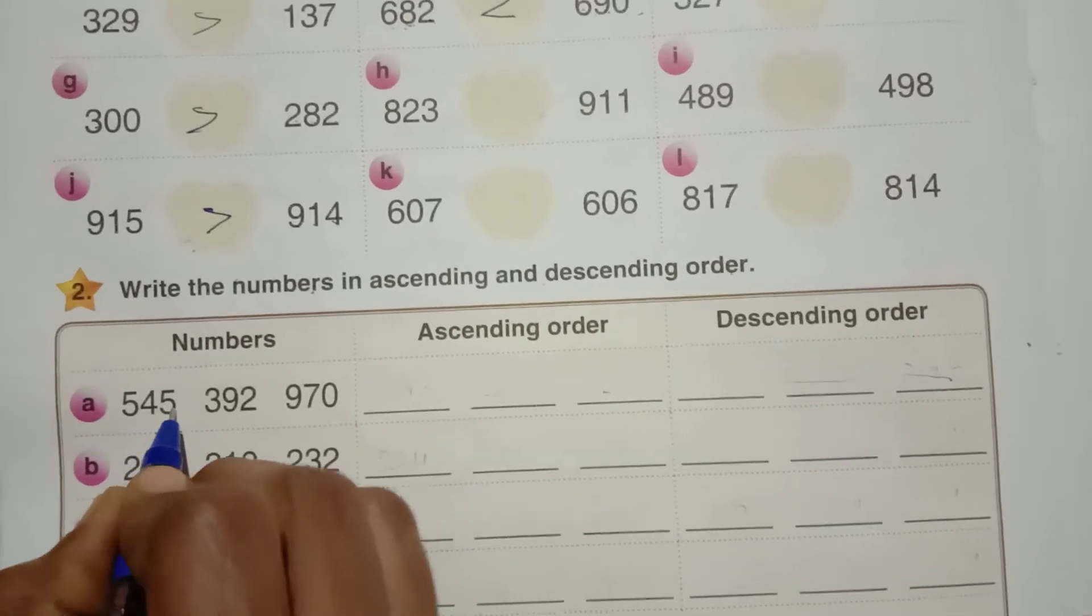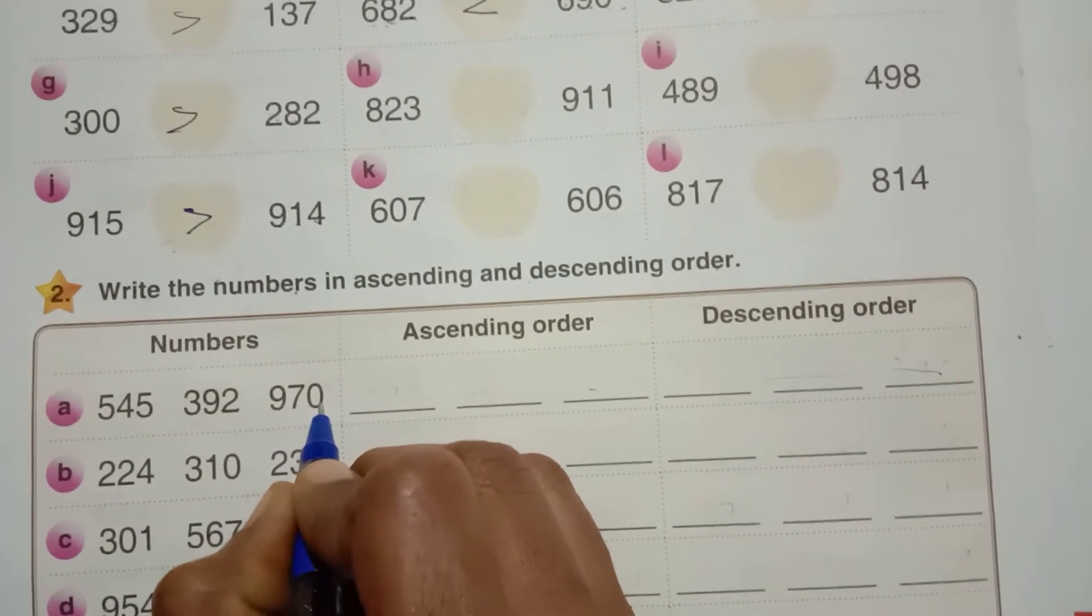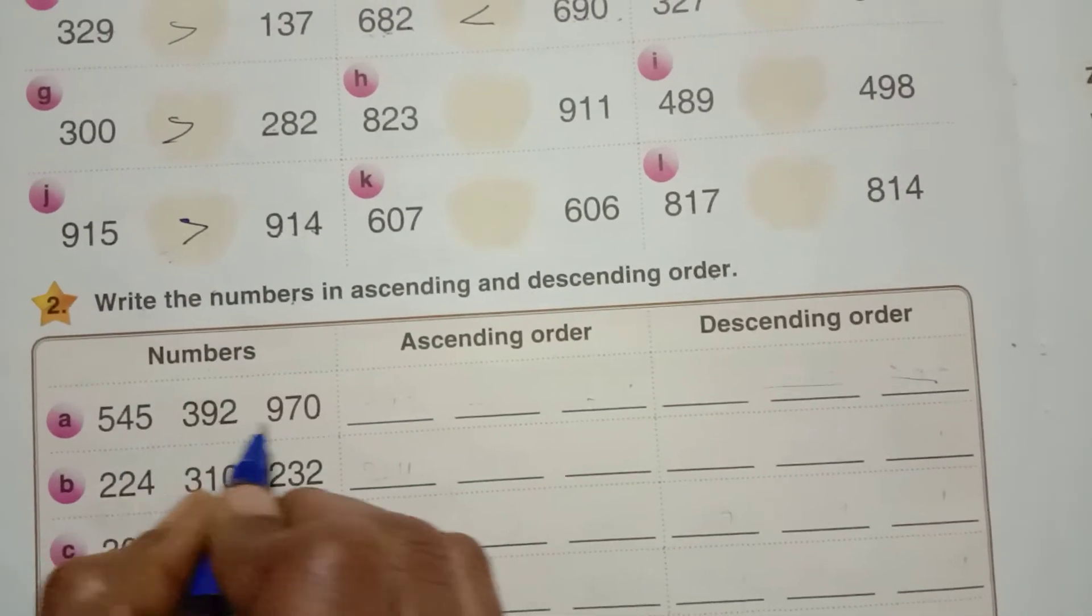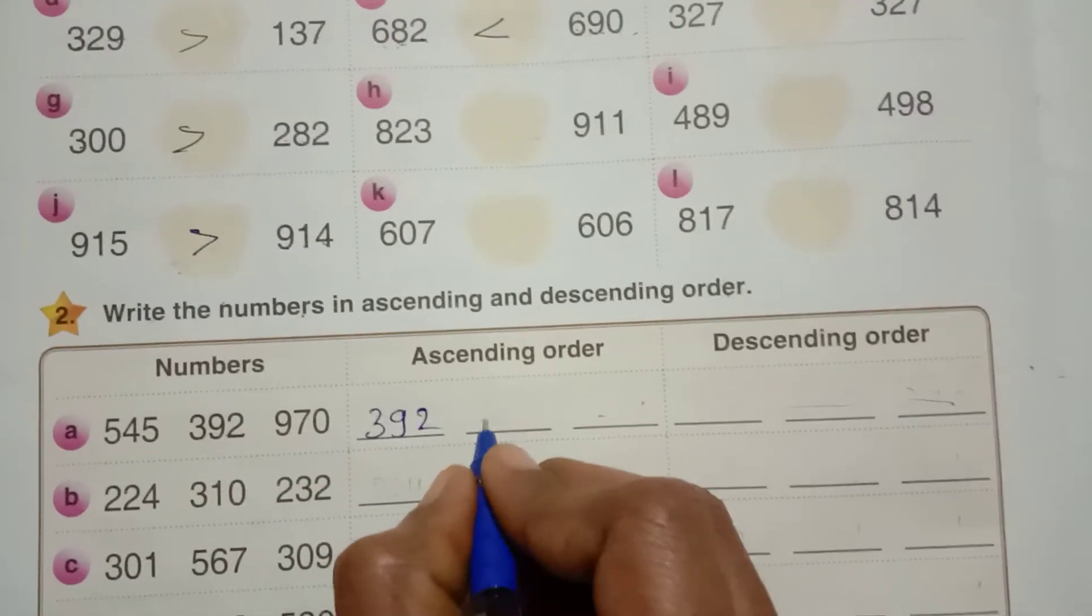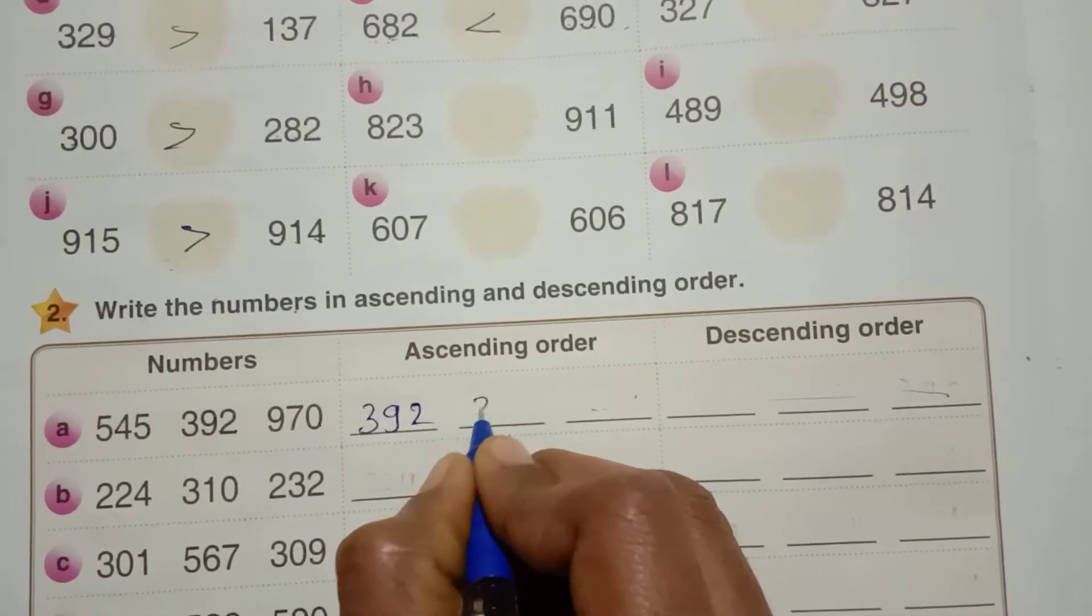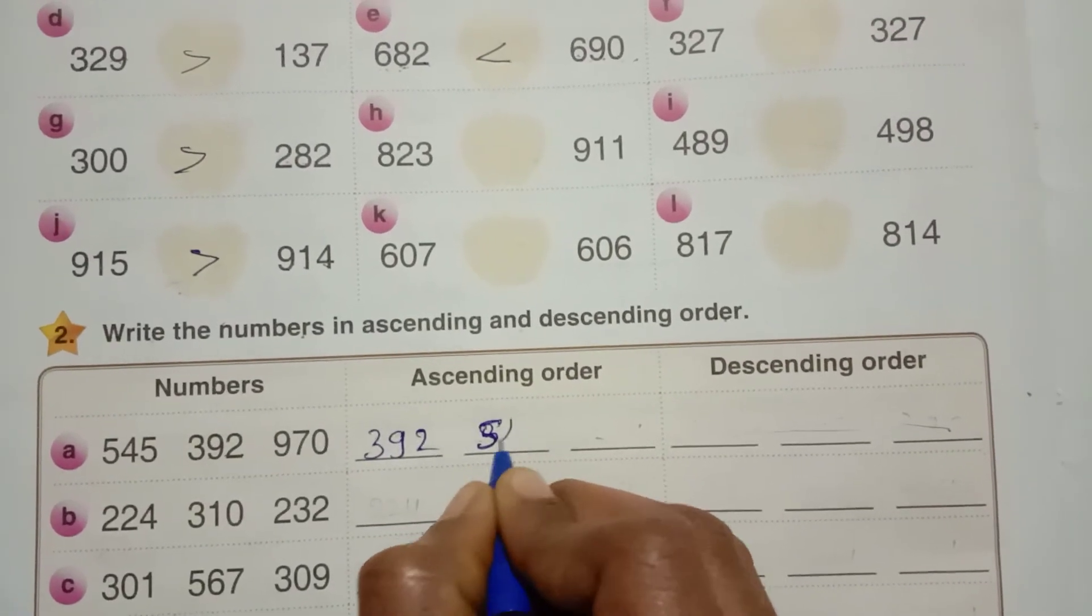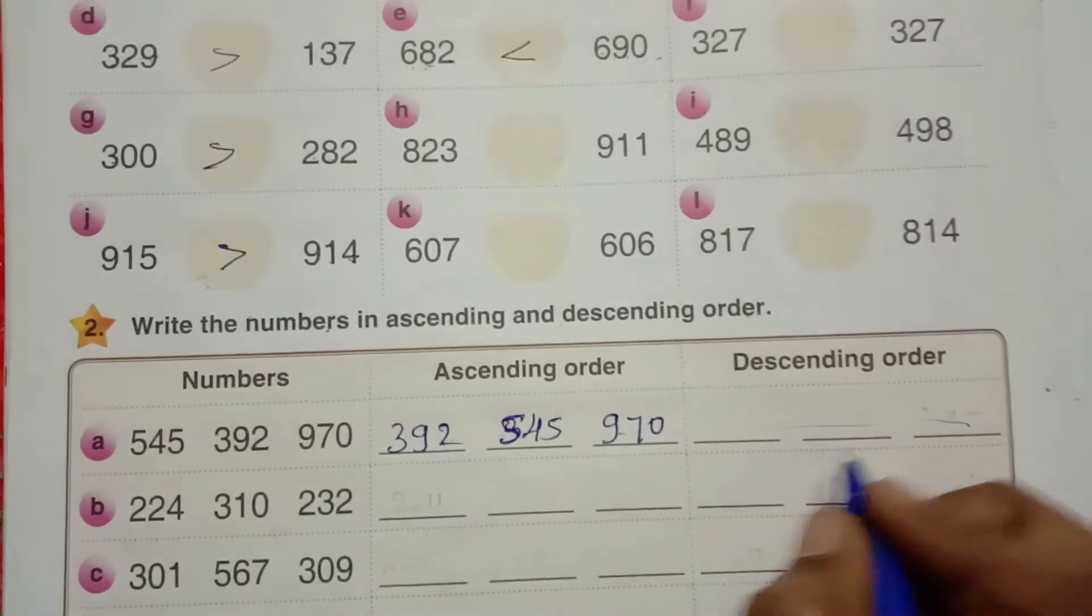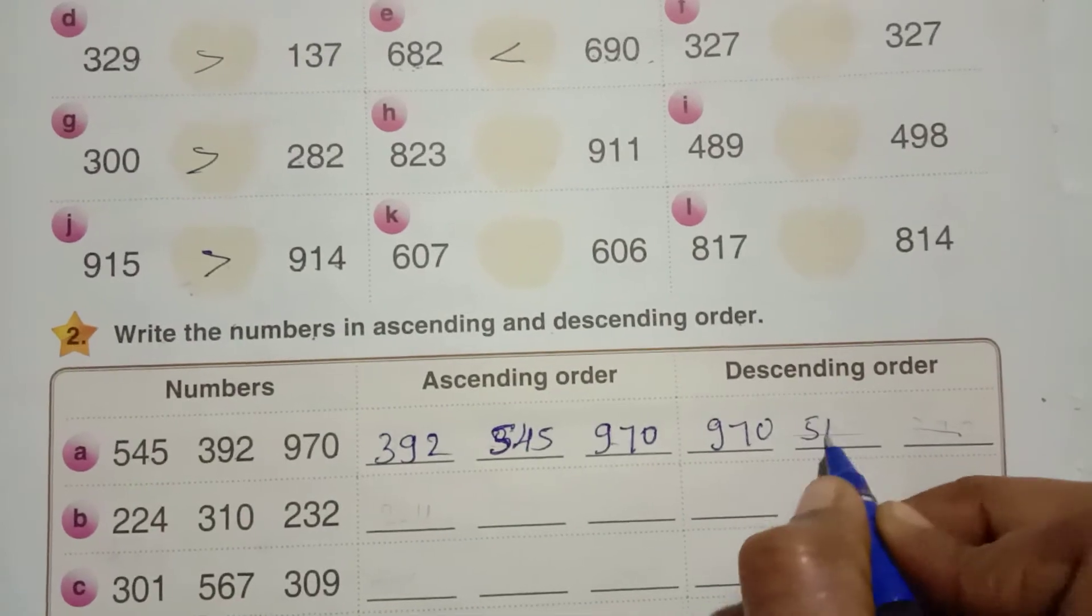See, 545, 392, 970. Ascending means smaller number to larger number. Which is the smaller number here? 392. Next between number, 545. Greatest number, 970. Descending order, 970, 545.